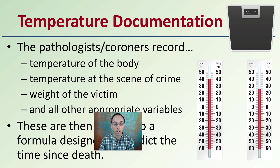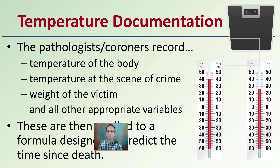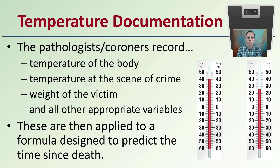When we're documenting temperature, we're taking down temperatures as we would normally. However, the pathologist or coroner's record is going to look at the temperature of the body, also taking into account the temperature of the scene, the weight of the victim, and all other appropriate variables. It's not just one temperature point — we're also looking at the individual, the surrounding conditions, and the weight or mass of that individual. These are then applied to a formula designed to predict the time since death. We have to consider many factors and should be documenting those, particularly when taking evidence.